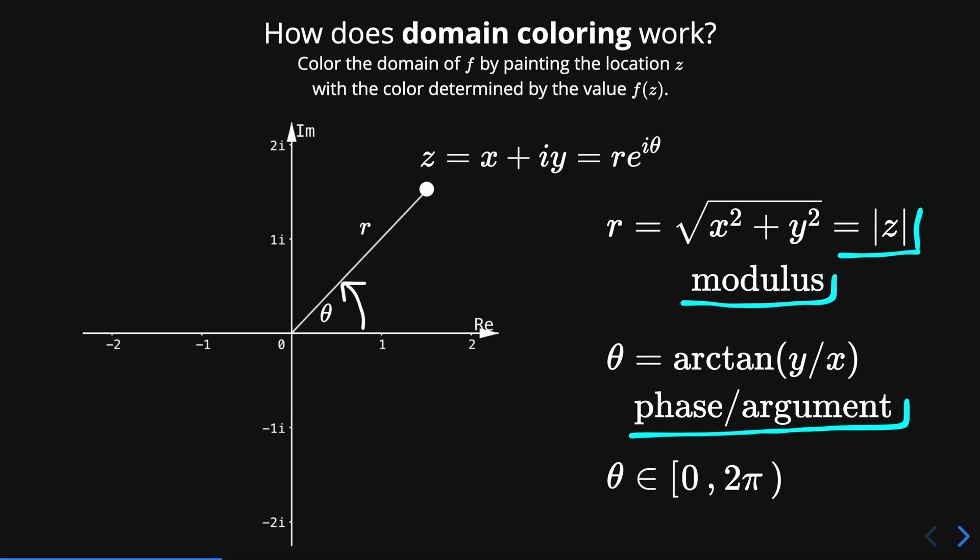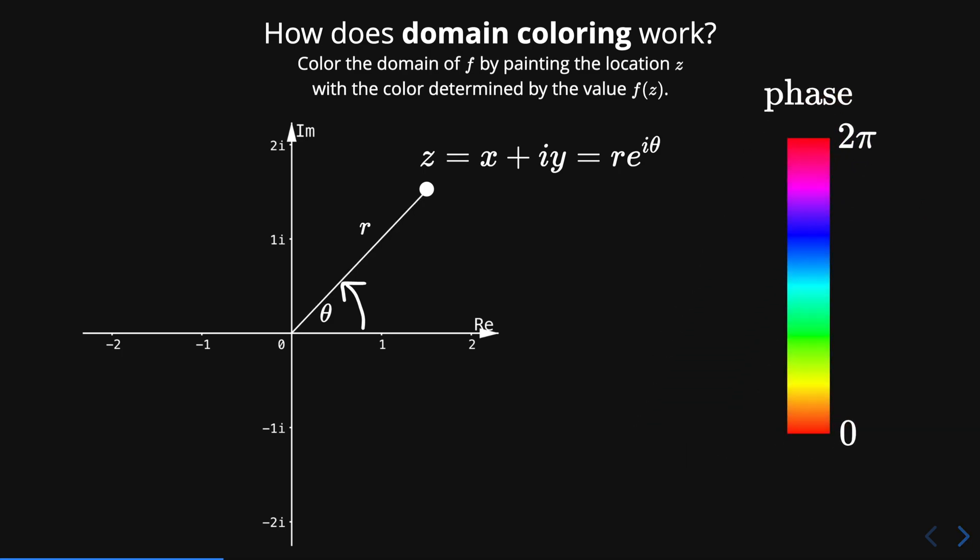Now, we map this angle to the rainbow colors or more precisely to the hue. So, for example, if the point z is in this position, the first quadrant, we measure its phase theta. The value is then mapped to this yellow color and finally we color the point using this color yellow.